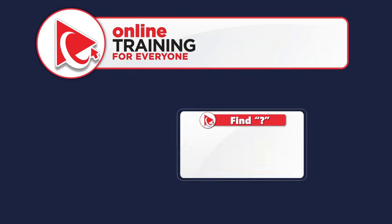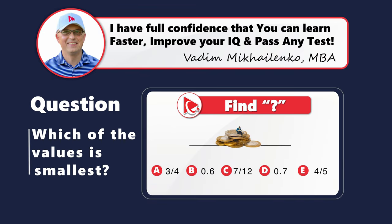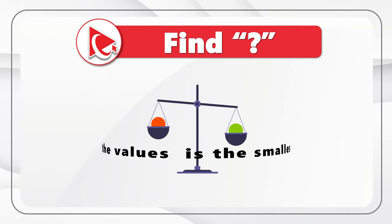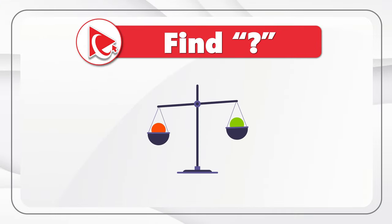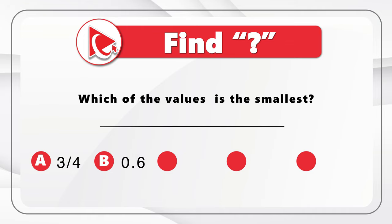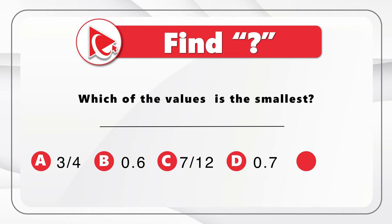Here's one of my favorite questions to test your analytical skills and attention to detail. You need to determine which of the values is the smallest. You're presented with five different values: choice A 3/4, choice B 0.6, choice C 7/12, choice D 0.7, and choice E 4/5.